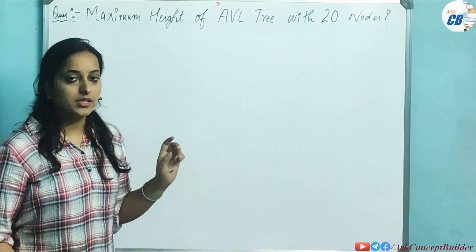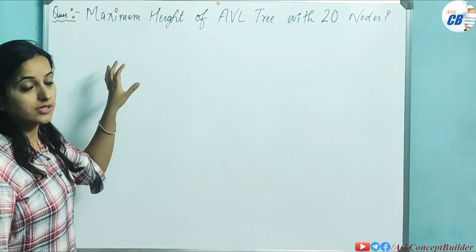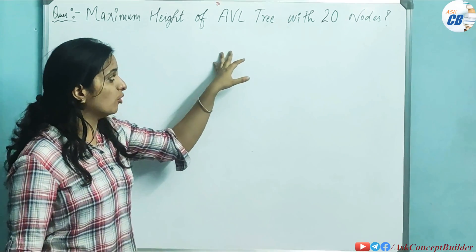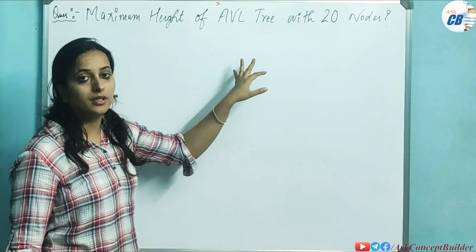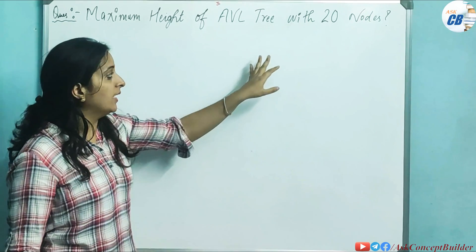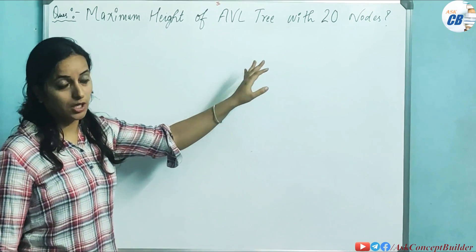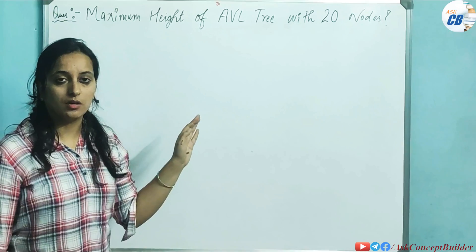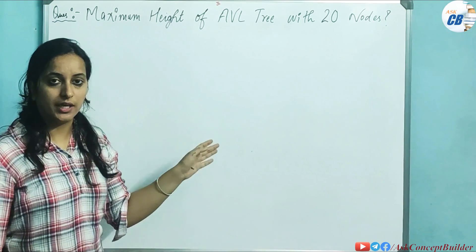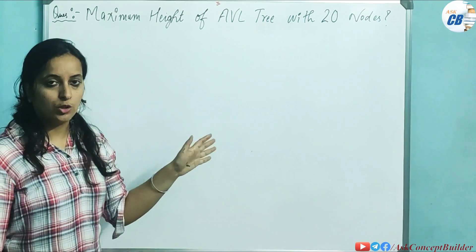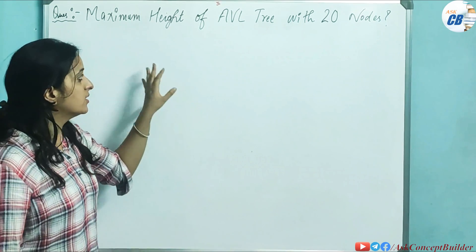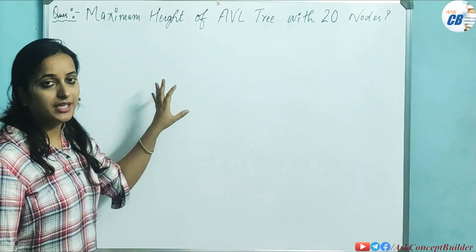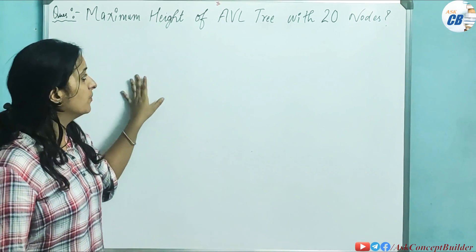In this video, I will discuss a question about the maximum height of any AVL tree possible with a given number of nodes. For example, suppose we are taking 20 nodes. This type of question is asked in competitive examinations like GATE, ISRO, and UGCNET, and it is very important for AVL trees.